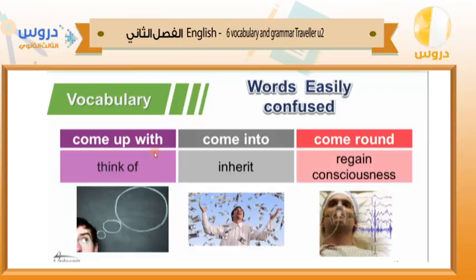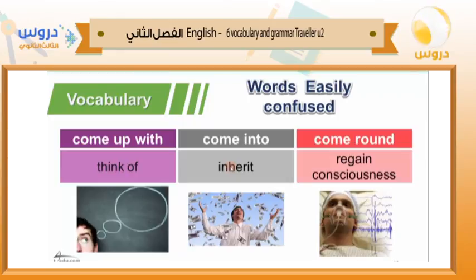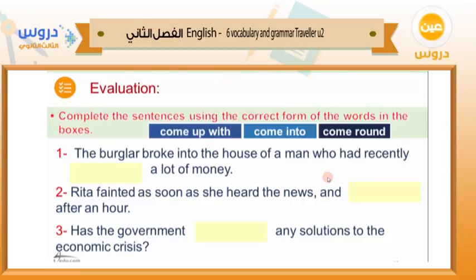Now we have a combined exercise covering confusing words and phrasal verbs together. 'Come up with' means to think of something or find a solution. 'Come into' means to inherit — for example, if someone from your family passed away and you receive their money, that is called inheriting. 'Come around' means to regain consciousness — for example, if someone was in a coma and then came back, he came around. Let's complete the sentences using come up with, come into, and come around.